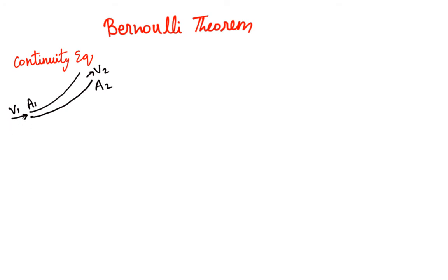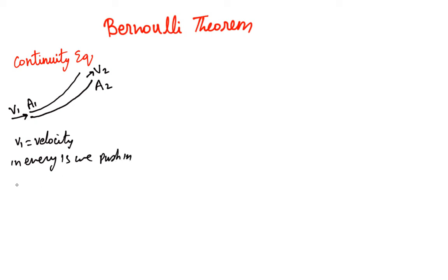There is one argument: the amount of fluid we are feeding in is equal to the amount of fluid coming out — the fluid is not being lost. So what is the amount of fluid being fed in every second? v1 is the speed, and in every one second we push in water of length v1 — that is how speed is defined, the amount of distance traveled every second.